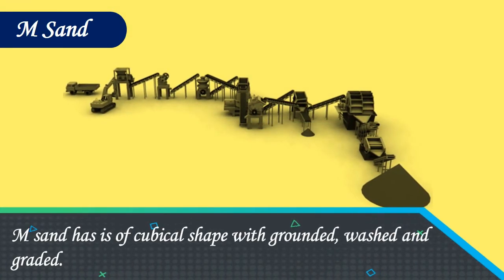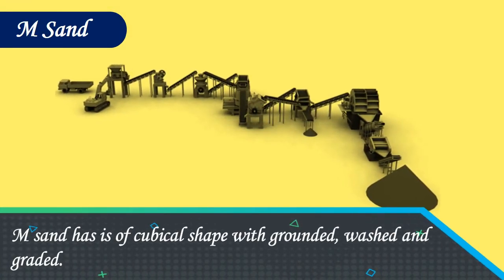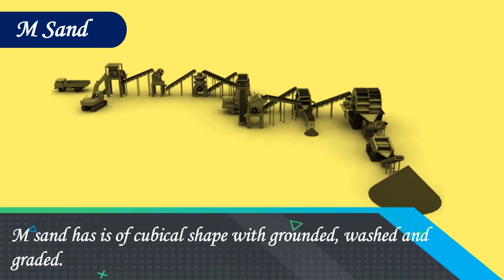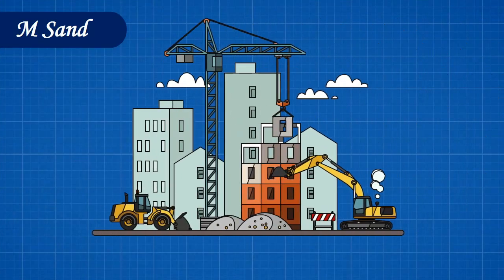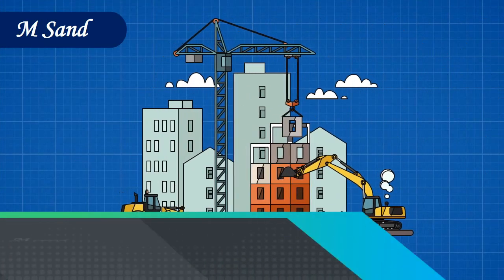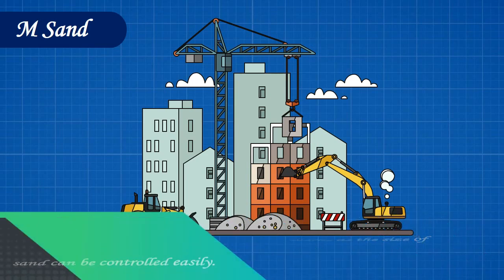M Sand is of cubical shape, washed, and graded. M Sand can be used in all construction works, as the size of sand can be controlled easily.